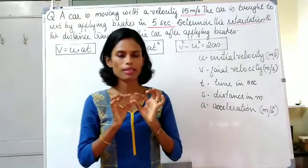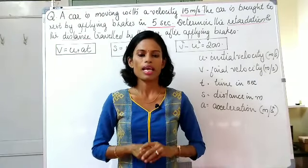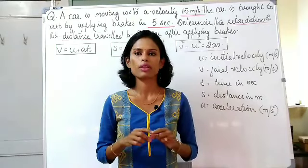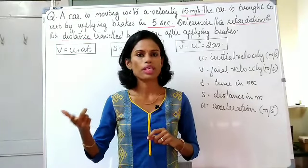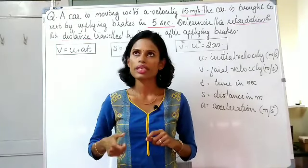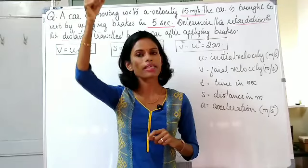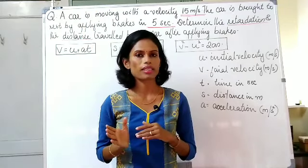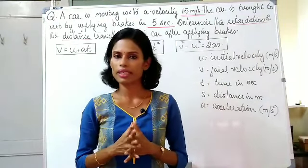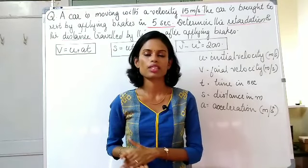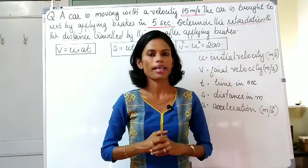In today's session we will discuss a basic topic on dynamics, engineering mechanics — that is linear motion. Let's consider an example of a train moving on a railway track. It's moving in a straight line. A car moving on a road is moving in a straight line. If I toss a coin upward, it takes a vertical straight line, reaches the maximum height, and comes down in a straight line. All these bodies are moving in a straight line, so a particle moving in a straight line is known as linear motion.